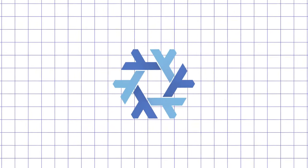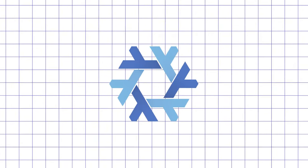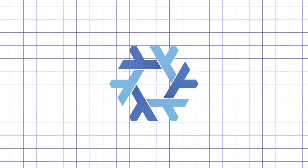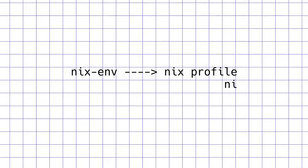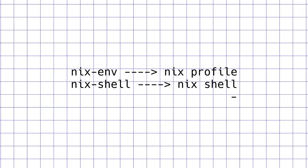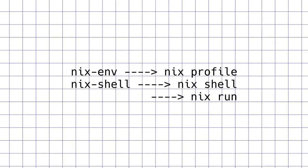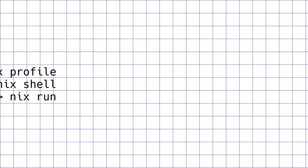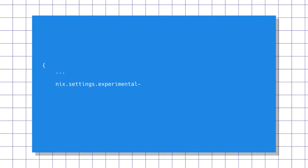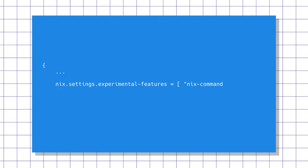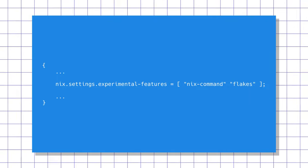I will also mention flakes — they are Nix flakes, a new experimental format for config files and packages that is better than the current one, with newer, faster, and more user-friendly versions of command line tools made for it, but it is slightly more complex and is not used by default just yet. Enabling flakes support is pretty easy with this option in your NixOS config: nix.settings.experimental-features equals a list with the strings "nix-command" and "flakes".